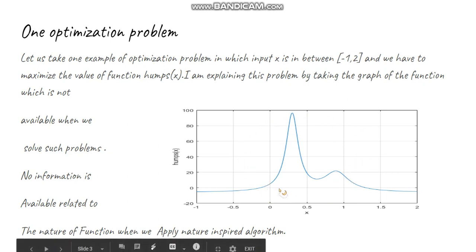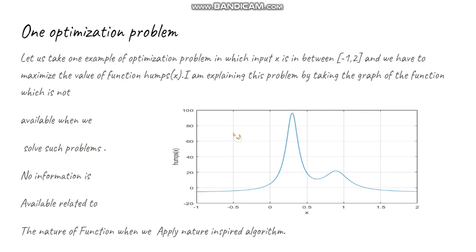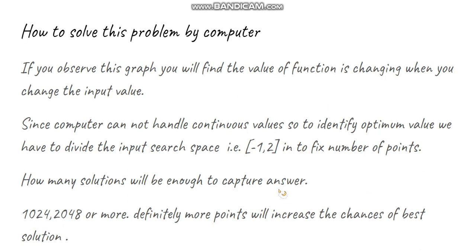Remember, this graph will not be available when you write a randomized or nature-inspired algorithm. So let us see how we can solve this problem by computer. There are two methods: either write a deterministic algorithm or a randomized algorithm. When writing a deterministic algorithm, the first step is to divide the search space into a fixed number of points and then compare all those points one by one based on the fitness function.